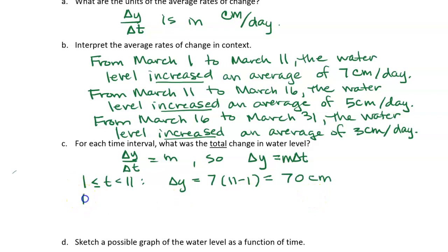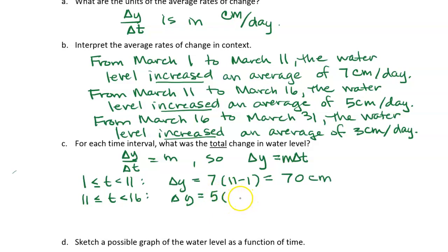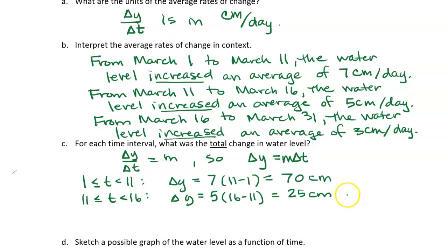For the next time interval, between the 11th and the 16th, our average rate of change was 5 centimeters per day, and we multiply that by the number of days: 16 minus 11, which is a 5-day period. We get a total change of 25 centimeters. That makes sense — if the water level is going up by 5 centimeters a day over 5 days, it's going to be a total change of 25 centimeters.